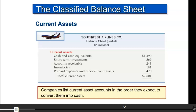Cash is the most liquid asset. Short-term investments can be turned quickly into cash. Accounts receivable represents sales made in the past — customers will be paying within 30 days. Inventory is what's on hand and will be sold within the next six months, turning itself into cash as well. So we list them in the order of liquidity.